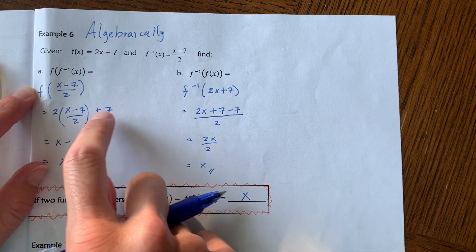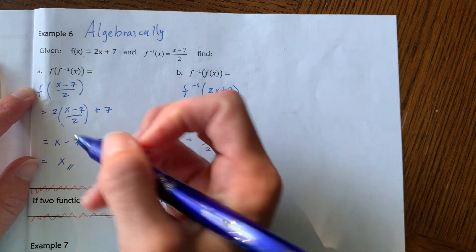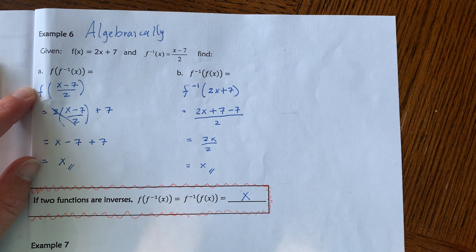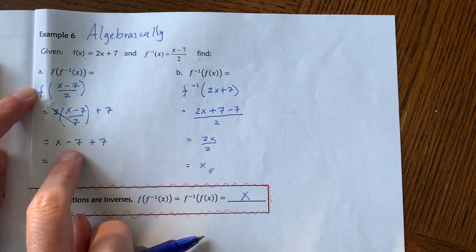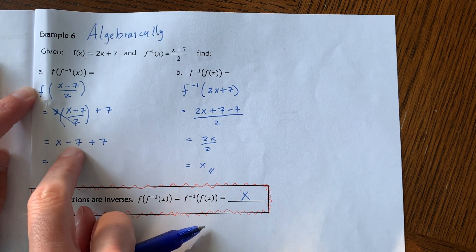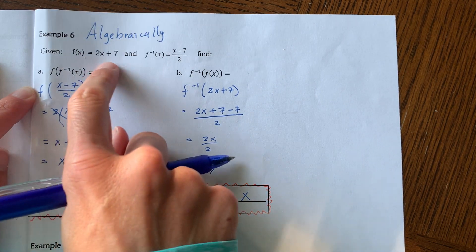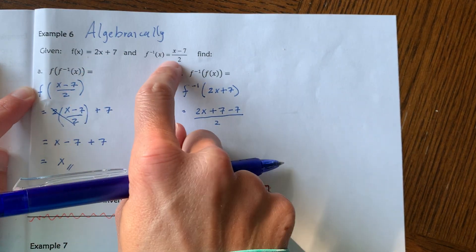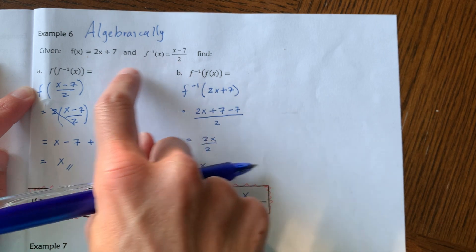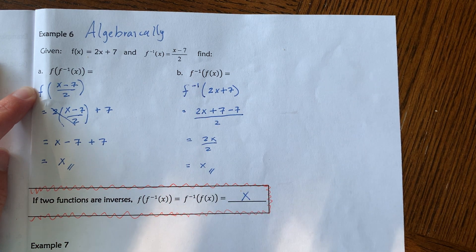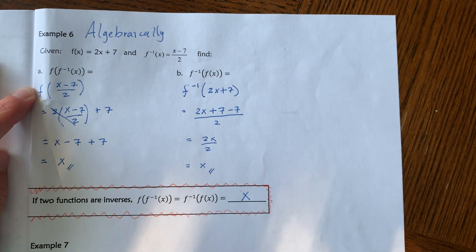f of x is negative 2x plus 7, so we have negative 2 times x minus 7 divided by 2, plus 7. The 2's cancel because I have 2 in the numerator and 2 in the denominator, and I'm left with x minus 7 plus 7. Negative 7 plus 7 equals 0, so this equals x. If two functions are inverses of each other and you compose them, it should always result in x, and it must be true for both f of f inverse and f inverse of f of x.